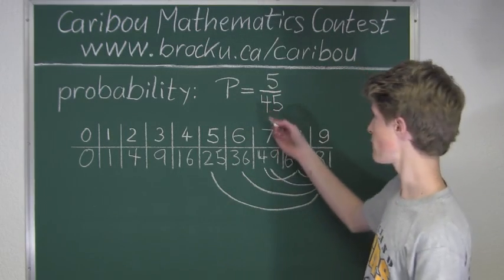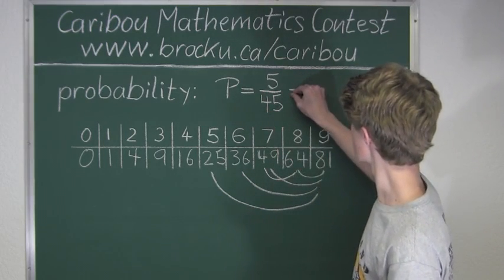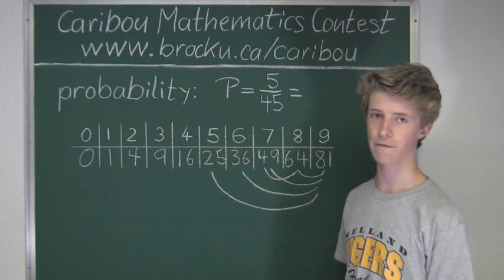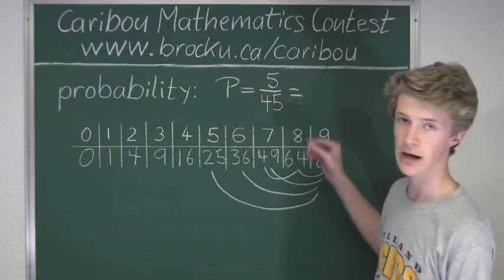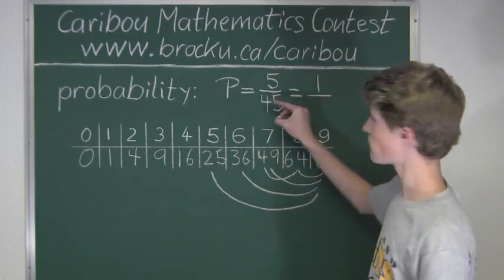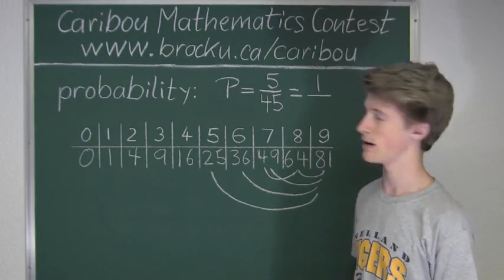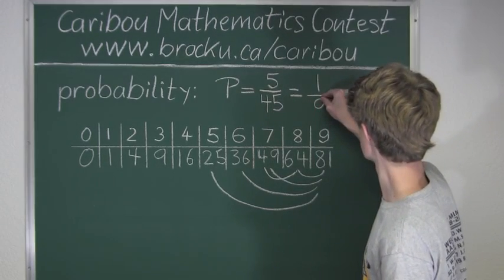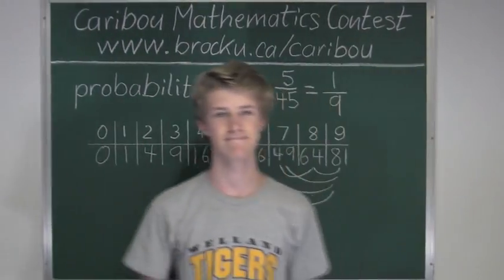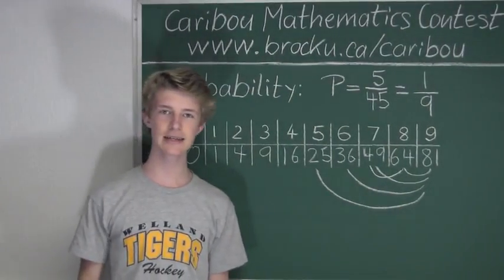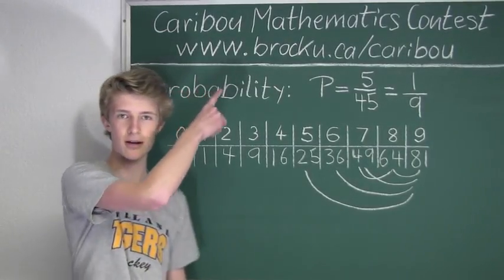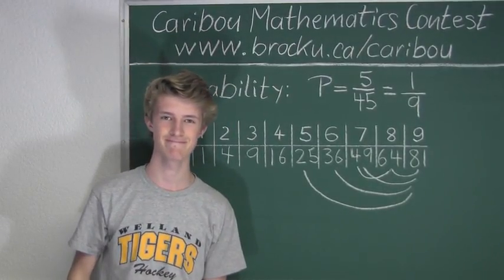So now we know that we can simplify 5 over 45. We will divide both the numerator and the denominator by 5. So 5 divided by 5 is 1, and 45 divided by 5 is 9. So the answer is 1 over 9. If you'd like to know more about this contest, please feel free to visit our website at www.brocku.ca.